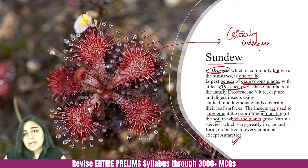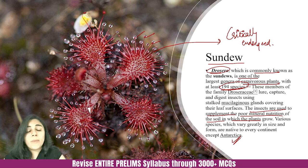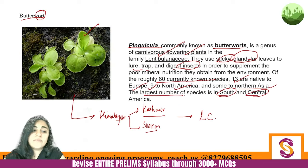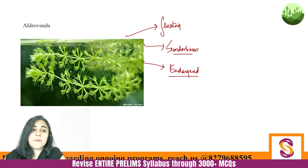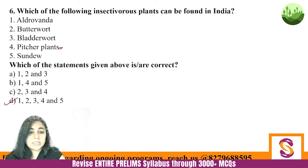Many insectivorous plants are found in Sundarban areas. To summarize, we have covered five kinds of insectivorous plants: Alvrovanda, Butterwort, Bladderwort, Pitcher Plant, and Sundew. Remember — these are insectivorous, not invasive.